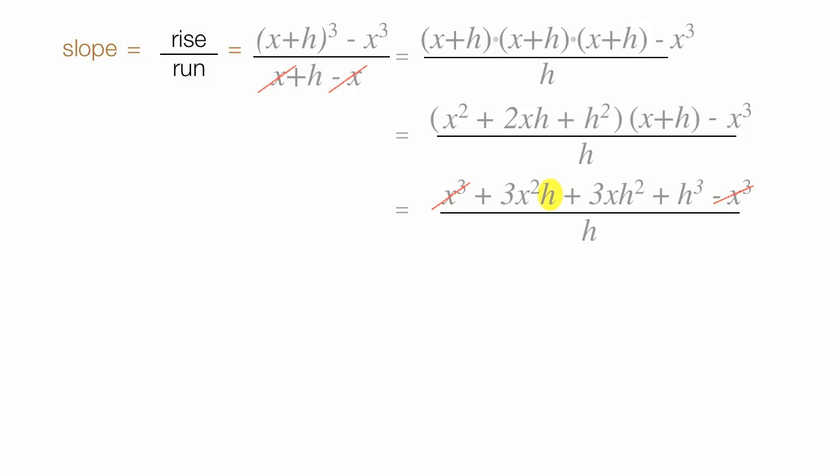Notice there's an h in each one of these remaining terms. I'm going to factor that h out. Pull an h out, and it leaves me with 3x squared plus 3xh plus h squared, divided by h. Like that. These two h's cancel.